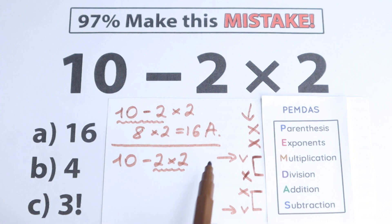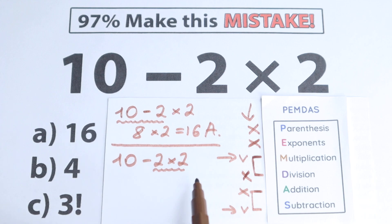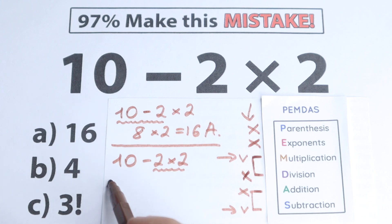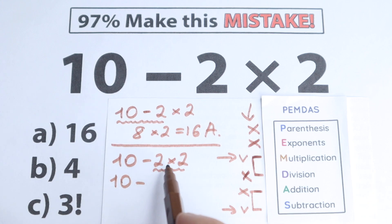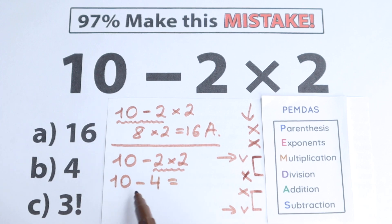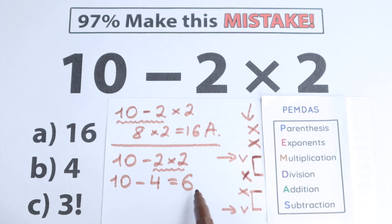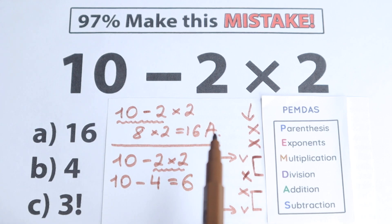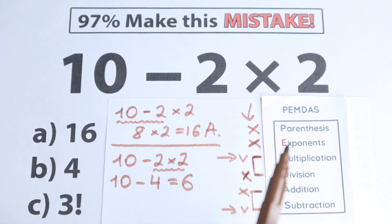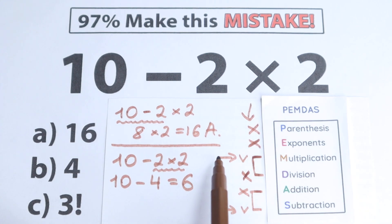This is the key moment — we need to multiply first. Do the multiplication and division group first, then end with subtraction. So: 2 times 2 equals 4, and then 10 minus 4 equals 6.